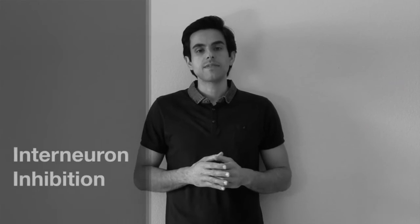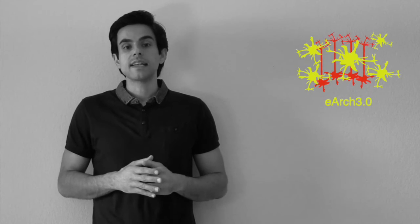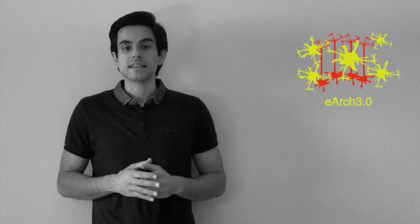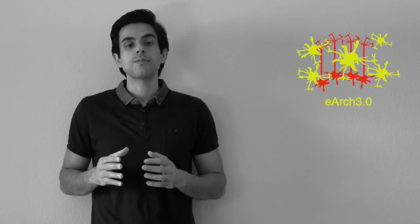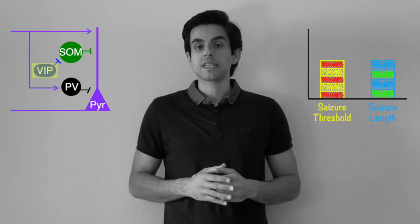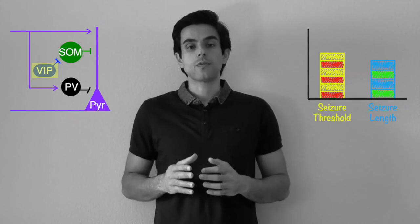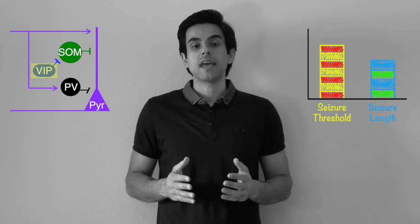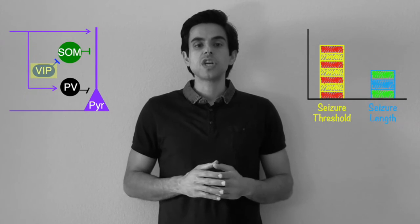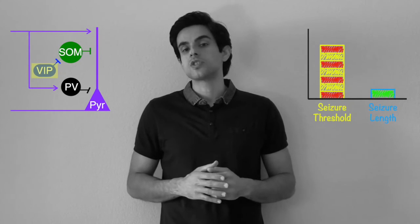In order to better understand the role of different types of interneurons in seizures, we used a hyperpolarizing light-activated ion channel, Arch, to selectively silence the activity of parvalbumin, somatostatin, and VIP interneurons. We were able to demonstrate that inhibiting VIP interneurons increased the optogenetic seizure threshold and decreased seizure length, suggesting a consistent anti-seizure effect.